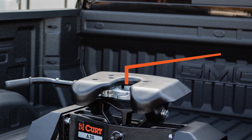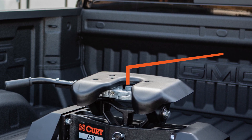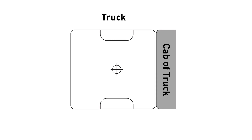Step 2: Determine the distance from your hitch to the cab of your tow vehicle. Measure from the center of your hitch or coupling point to the cab of the truck. The center of the hitch to the cab gives you measurement Y.